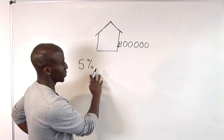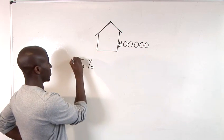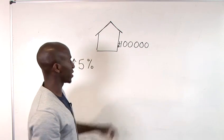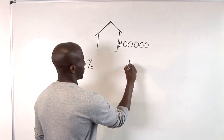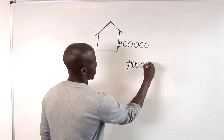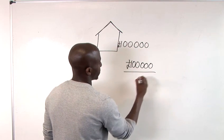So, what we would first of all do is find out 1% of this house. So, we take the value and we divide it by 100.